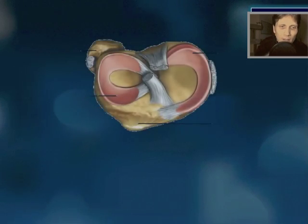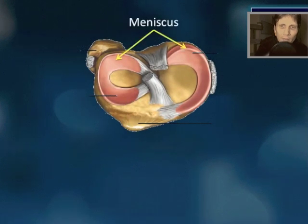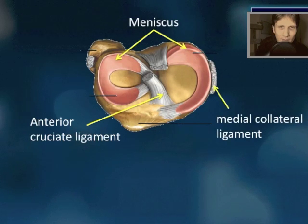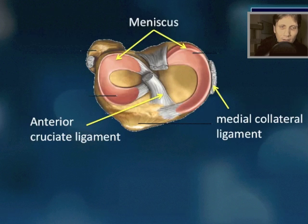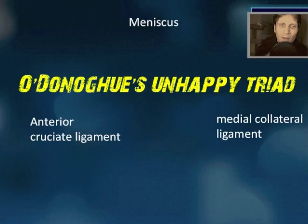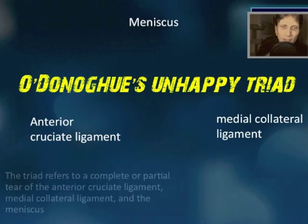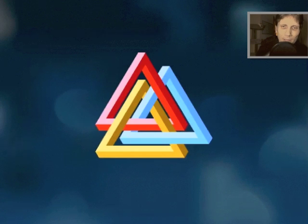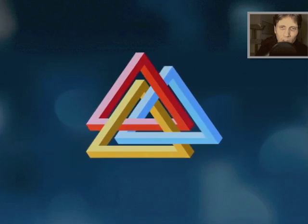Name the triad and the associated condition: the meniscus, anterior cruciate ligament (ACL), and the medial collateral ligament (MCL). When all three of these are damaged, this is O'Donohue's unhappy triad. The triad refers to a complete or partial tear of the ACL, the medial collateral ligament, and the meniscus. And that's it for medical triads part one — eponyms. Until next time, so long, goodbye.